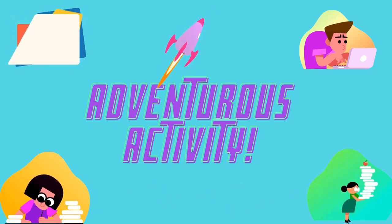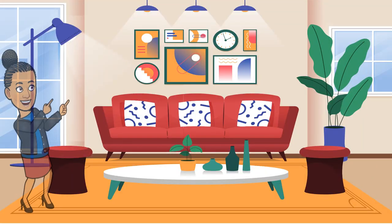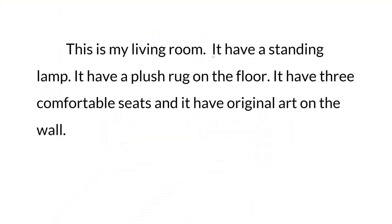Let's practice what we've learned. At the beginning of this video, I described my living room using Creole: "it have a standing lamp, a plush rug on the floor, three comfortable seats, and original art on the wall." This is fine when speaking to someone who speaks Trinidad Creole. However, for a foreign television audience that may not speak Creole, we can use "there is" and "there are." Since a standing lamp is singular, we would say "there is a standing lamp." For one plush rug, we would again use "is" — "there is a plush rug."